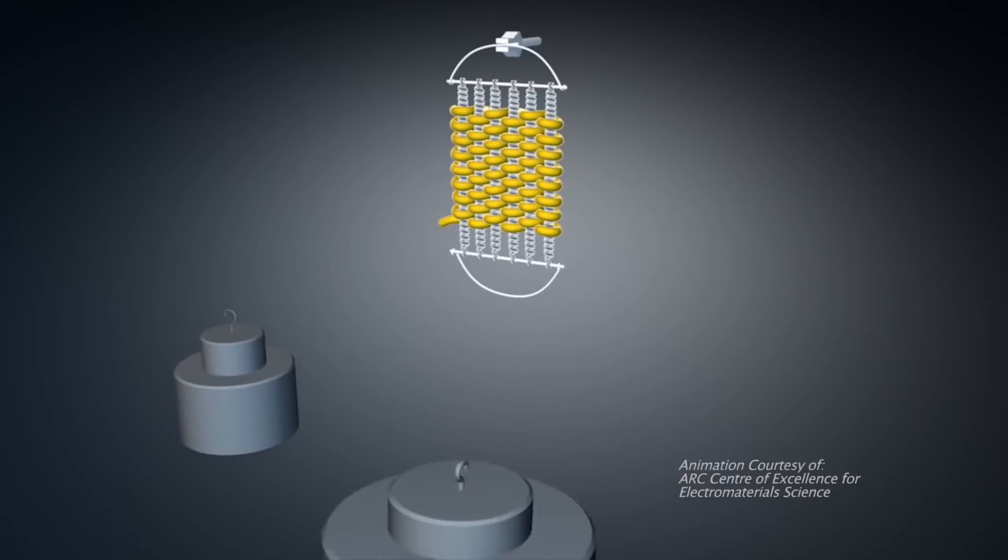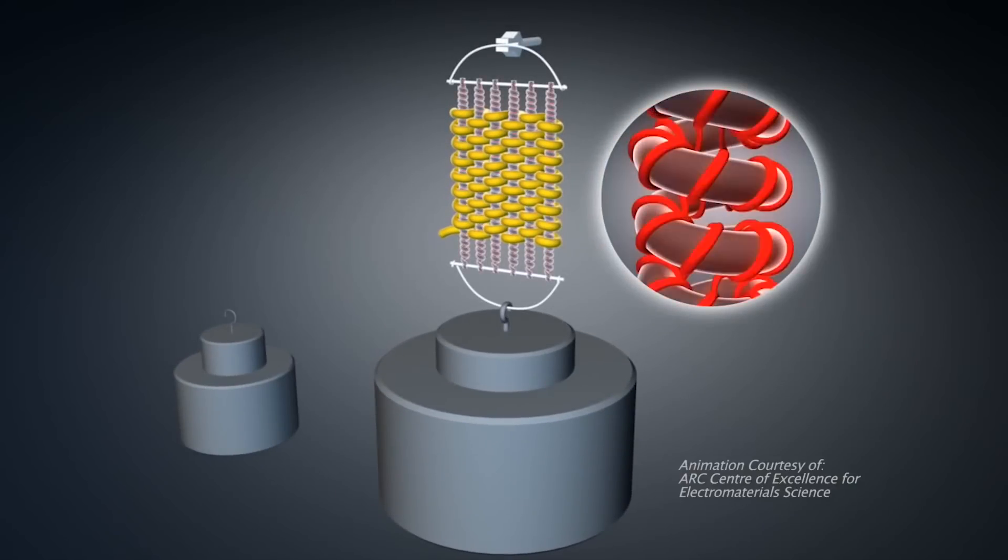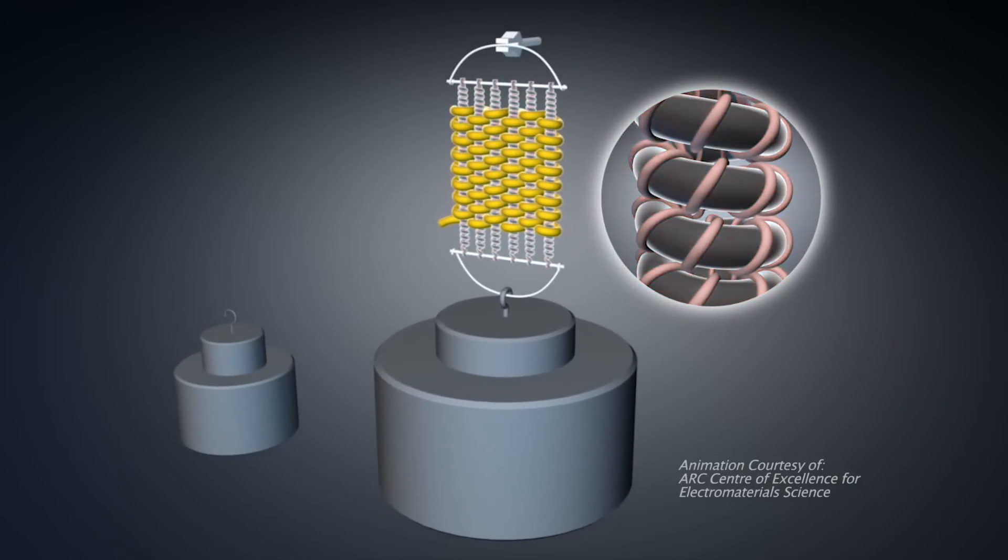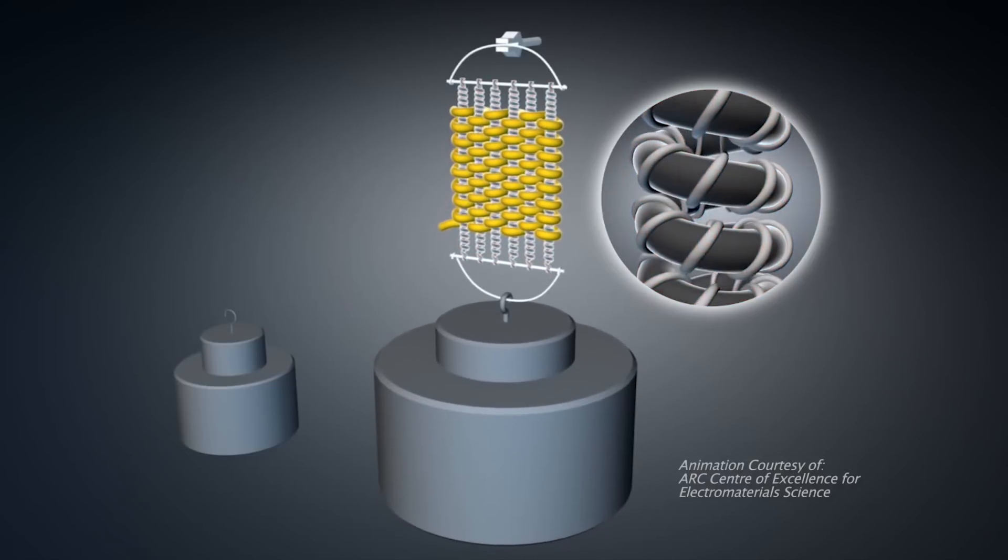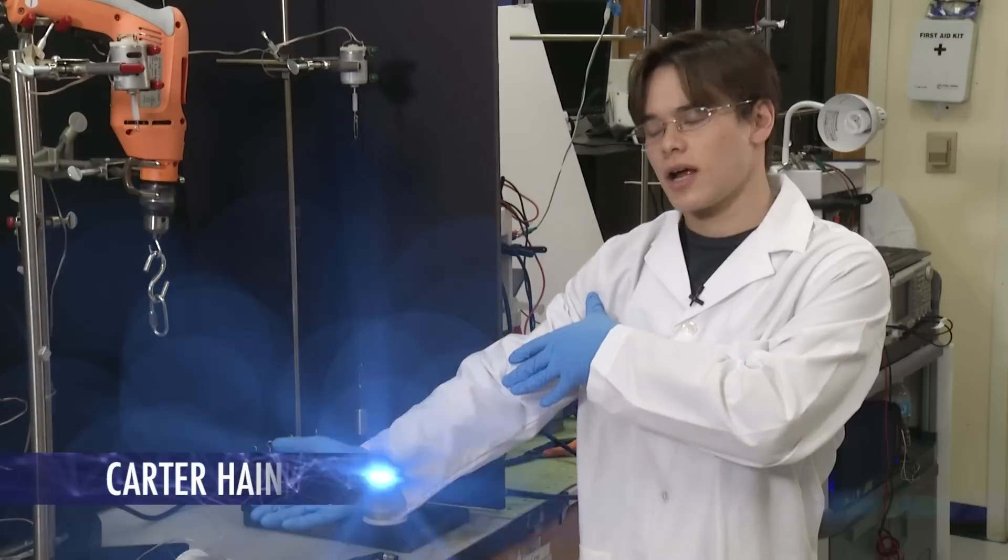The new muscle-like material can lift 100 times more weight and generate 100 times higher mechanical power than human muscles of the same size. You could actually get more force from fishing line than you can get with your natural muscles.